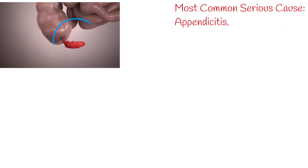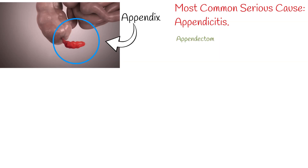the most common cause is appendicitis. Appendicitis is inflammation of the appendix, which is a part of the intestine. Treatment of appendicitis is surgical removal of the appendix, called appendectomy. Appendectomy is the most common surgical operation of the abdomen.